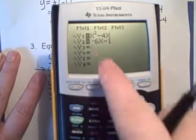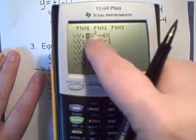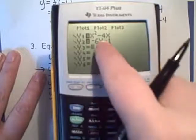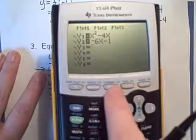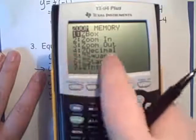I want to see the graph of my parabola, my original function, and my tangent line. Usually I don't know what my window is going to look like, so I'm going to use one of my preset windows by going zoom, and I'm going to choose zoom decimal.